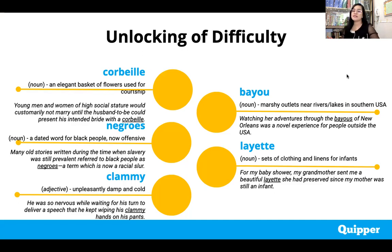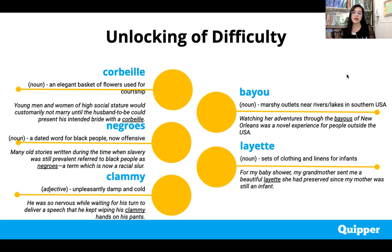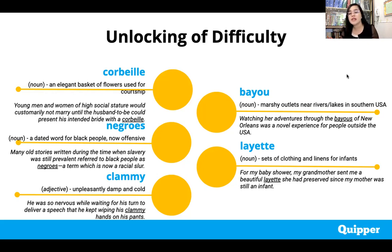'Bayou' is a marshy outlet near rivers and lakes in the southern USA. Example: watching her adventures through the bayous of New Orleans was a novel experience for people outside the US. And 'layette' means clothing and linens for infants. Example: for my baby shower, my grandmother sent me a beautiful layette she had preserved since my mother was still an infant.